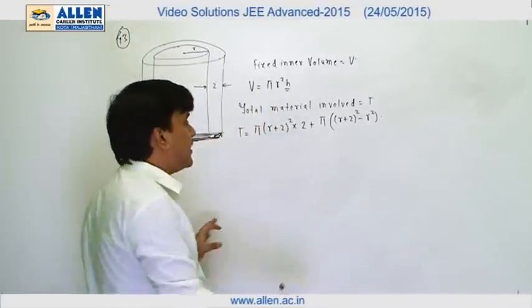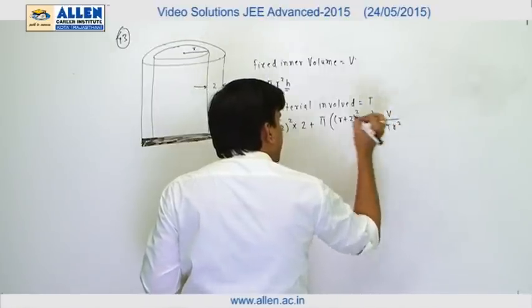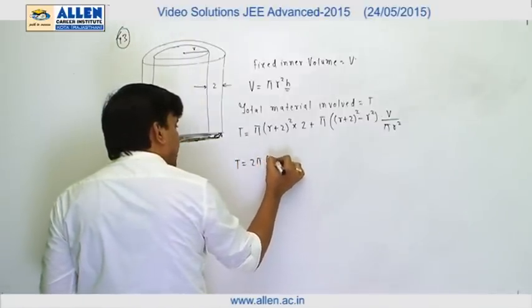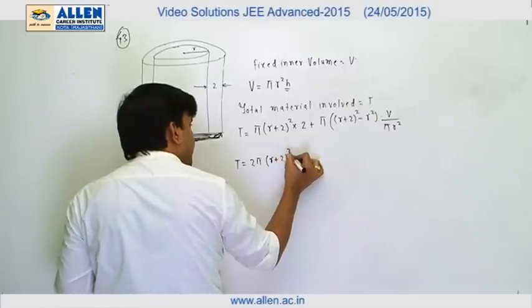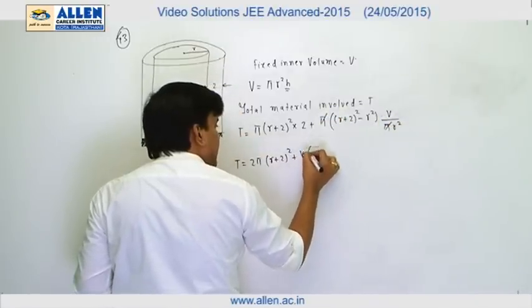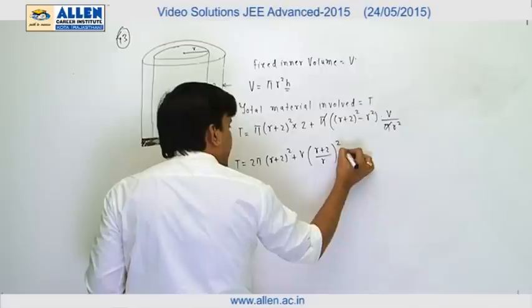h we can calculate from here, and this is v upon π r², and v is a fixed quantity. So we have T as 2π (r + 2)² plus v times (r + 2)² upon r² minus v.